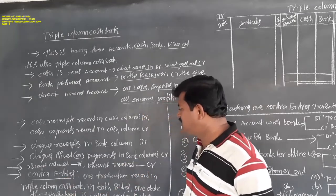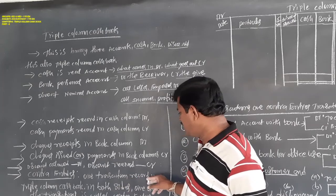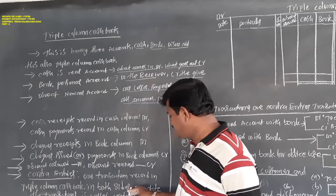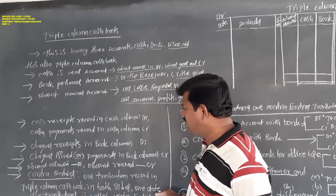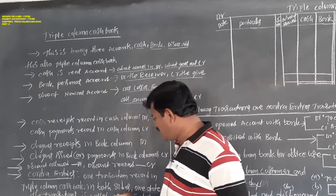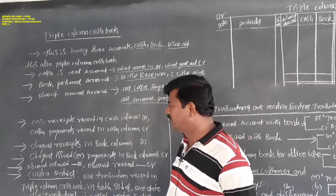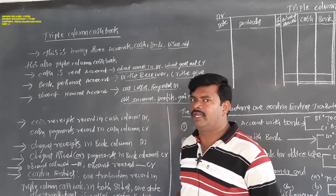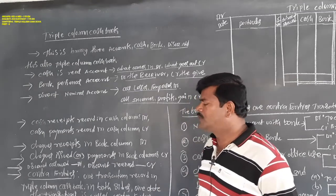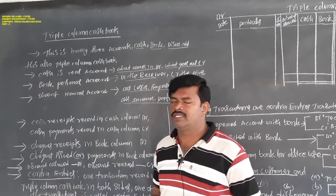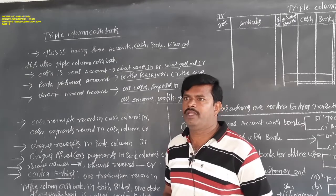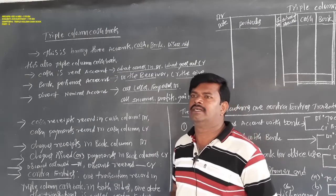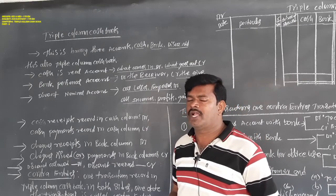Contra entries means one transaction is recorded in the triple column cash book on both sides on the same date. Some transactions are recorded on the debit side as well as the credit side simultaneously on one date. That type of transaction is called a contra entry. Contra means opposite.